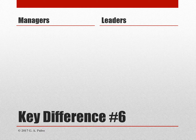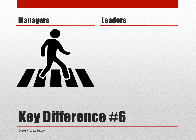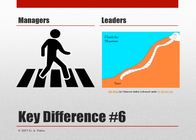The sixth and final primary difference focuses on time frame. Managers have a short-term focus — they look at the foreseeable future, like crossing from one side of the street to the other. In contrast, leaders have a much broader, longer-term vision — they're looking at the distant horizon. Crossing the street is just one part of the path that leads up the mountain to the desired goal: short-term focus versus long-term focus.